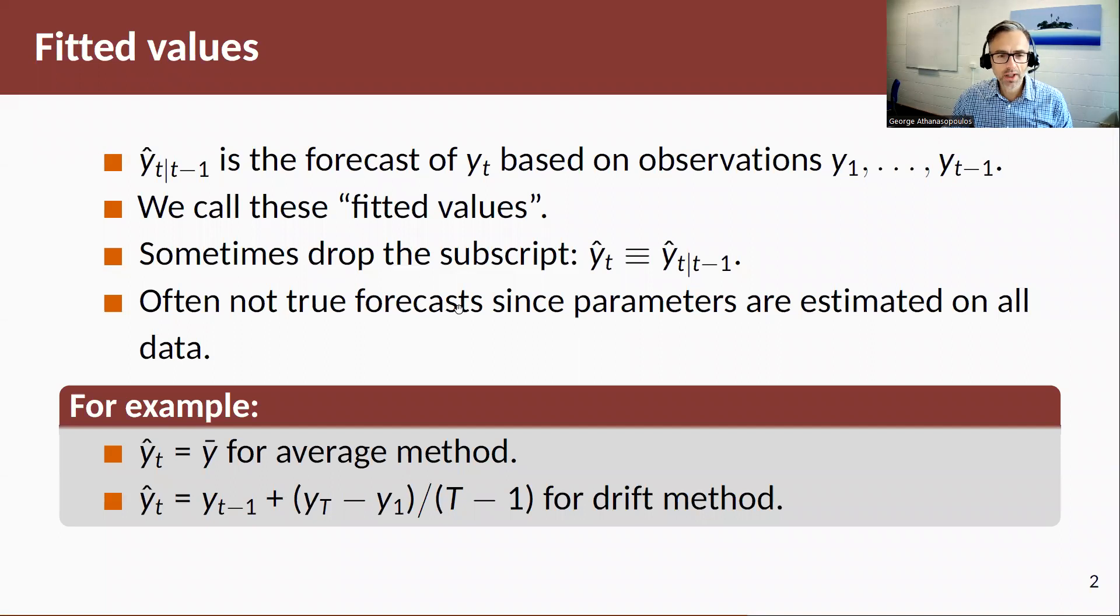What we define as a fitted value, ŷ_t|t-1, which is the expected value of a future observation y_t, given everything, all the information up to the period before that, t-1. So remember, let me just make this a little bit simpler. The forecast, our h-step ahead forecast out of sample, was denoted like this: